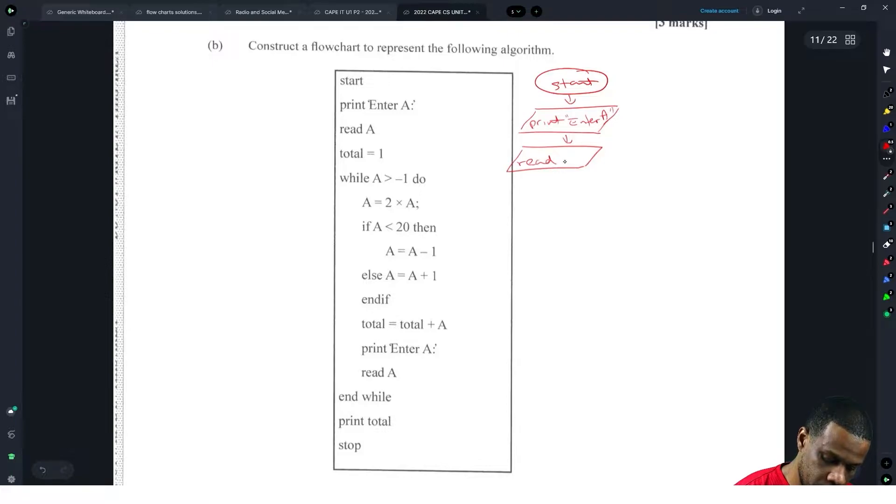Read A, and then total is equal to one, that is a rectangle. After that we have a while loop, so your while loop is definitely going to be a diamond because you have to make a decision. While A is greater than minus one, do you have a yes? So if the answer is yes, is greater than minus one, then your first thing that they have here is A is equal to two by A.